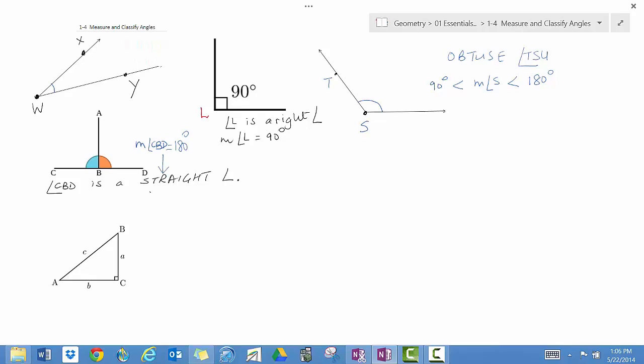So, the very first angle that we looked at, if you compare it, that's angle X, W, Y, or angle Y, W, X, or angle W, it's not a right angle, it's not an obtuse angle, and it's not a straight angle.